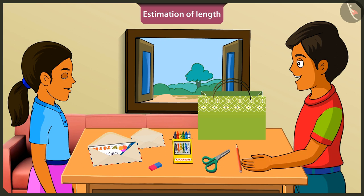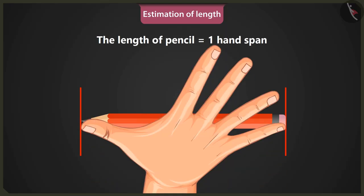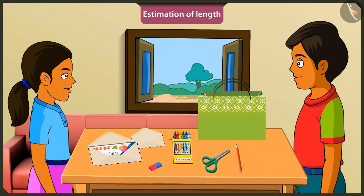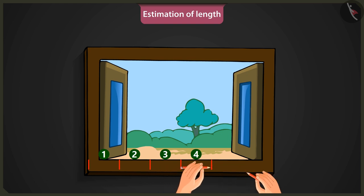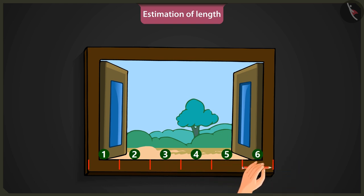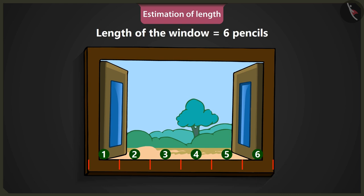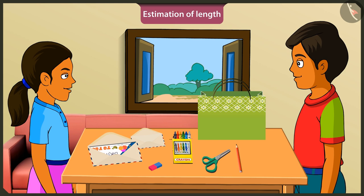Mintu, now try to measure the length of this pencil with your palm. The length of this pencil is equal to one hand span. Yes, Mintu. Now consider this pencil as a unit and use it to measure the length of the window. One, two, three, four, five, and six. The length of this window is six pencils long. So, like this, we can consider the measure of a smaller object as a unit to estimate the length of a bigger object.